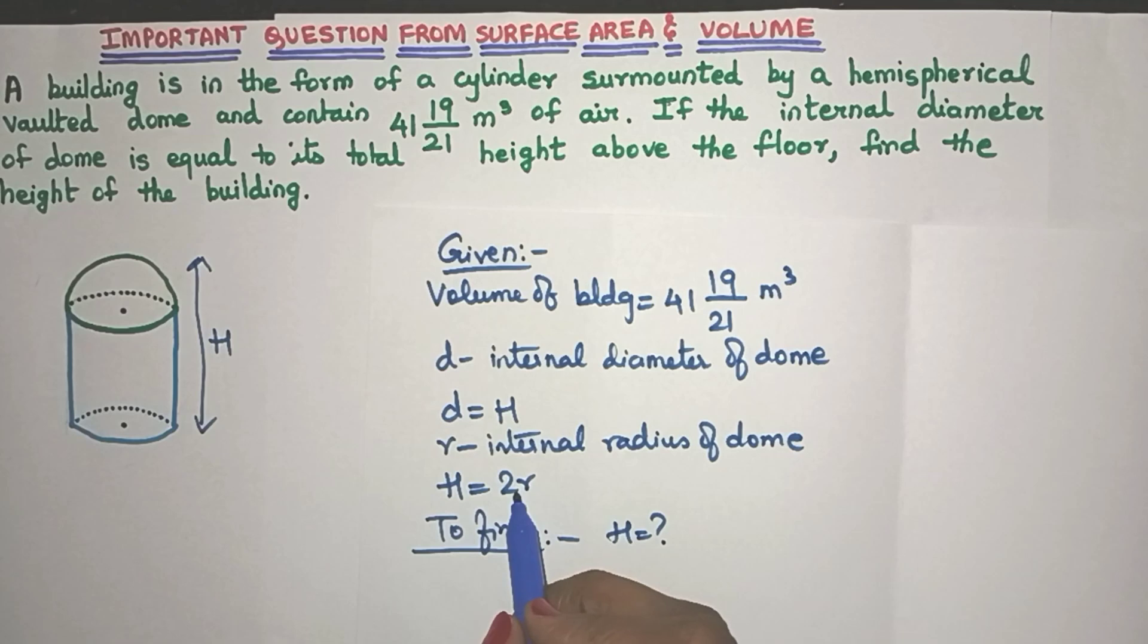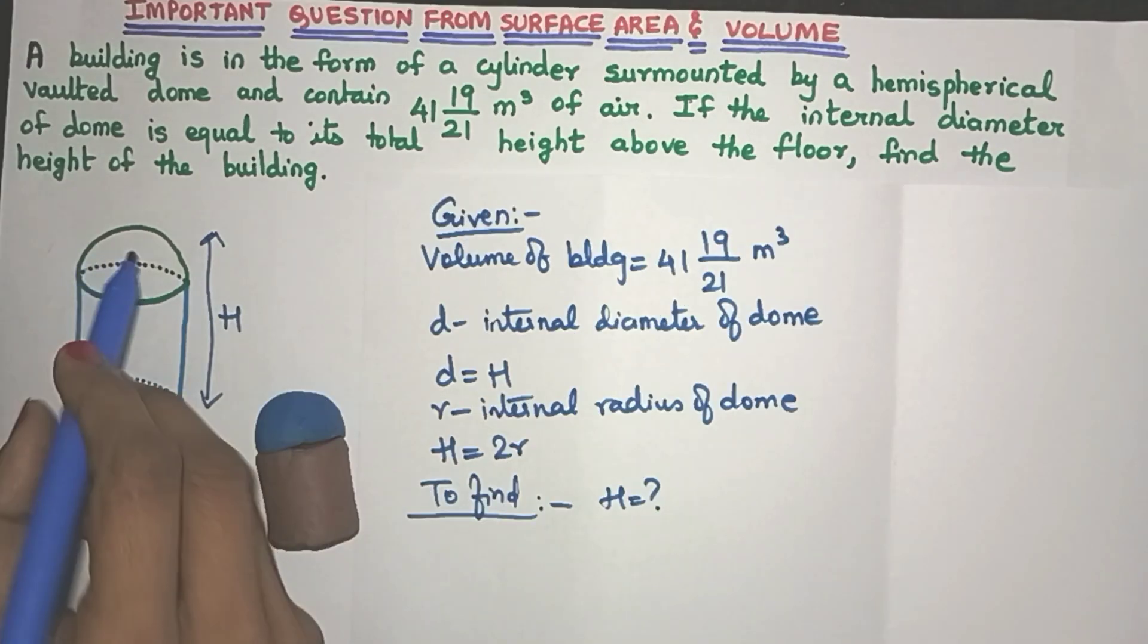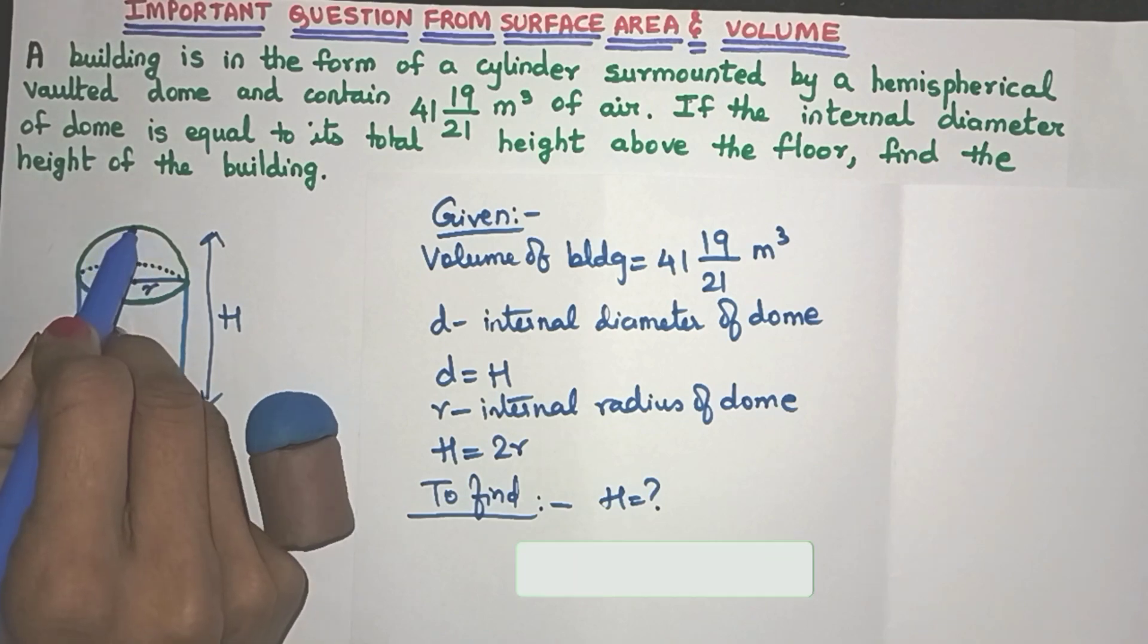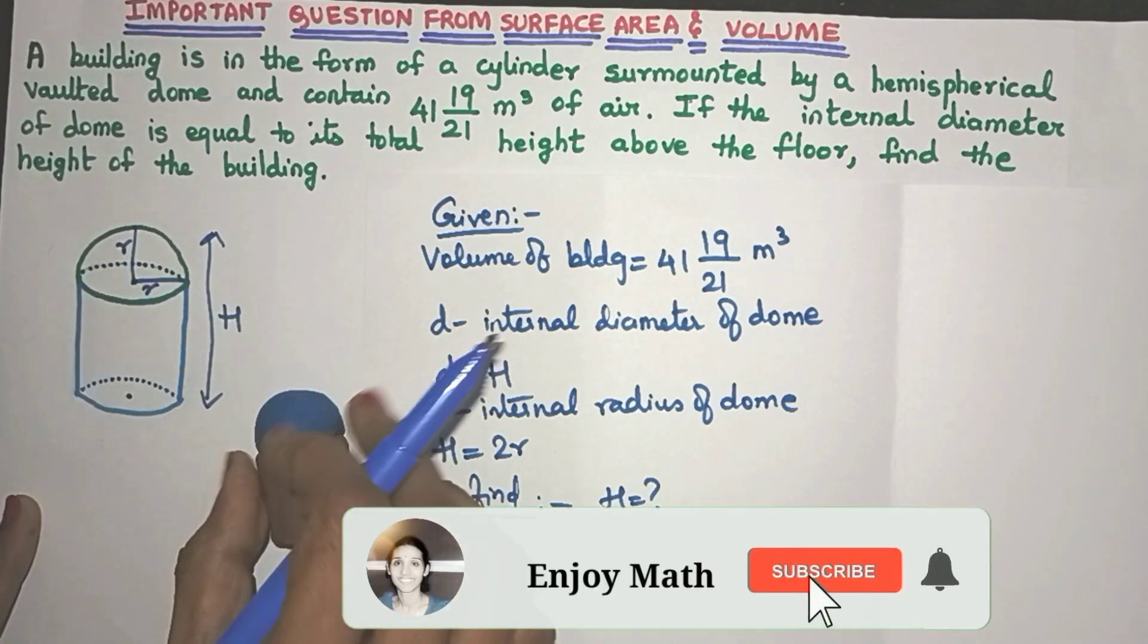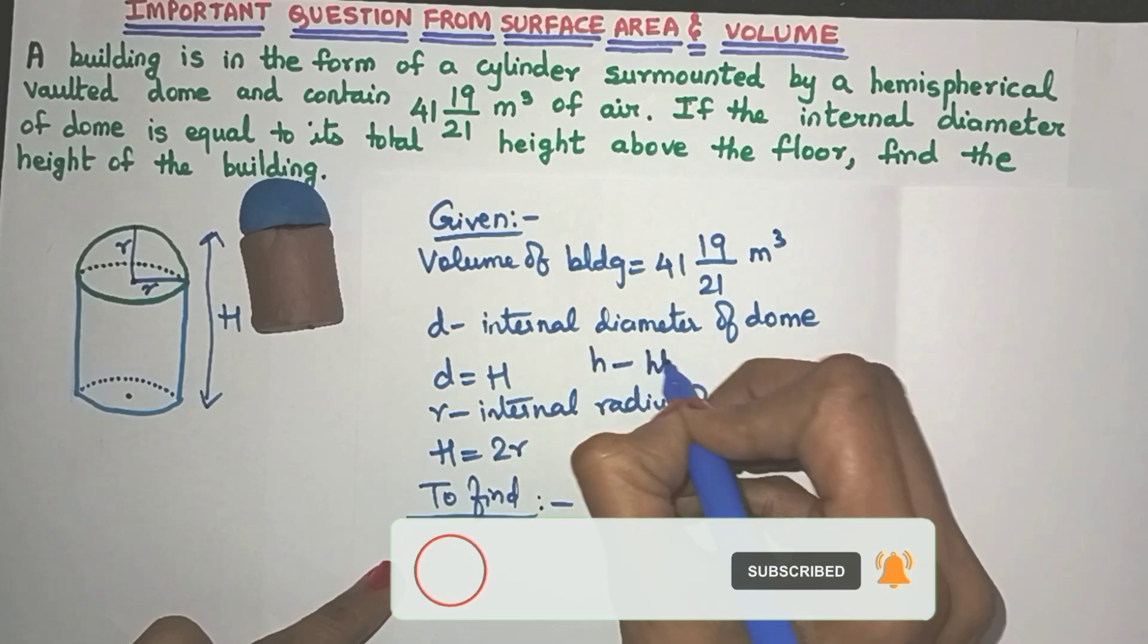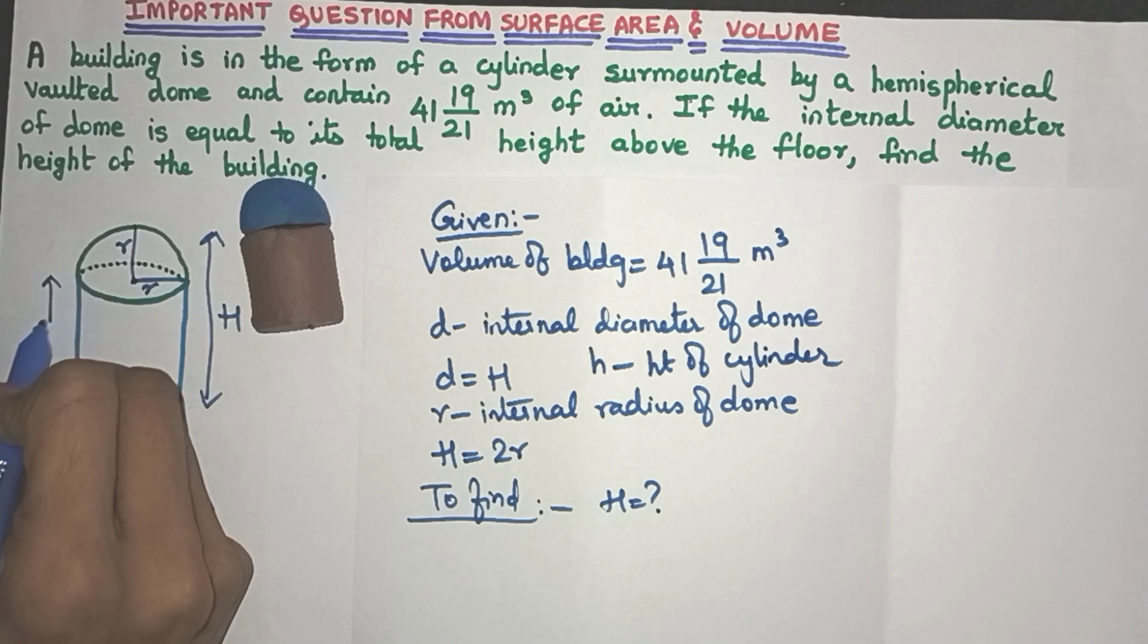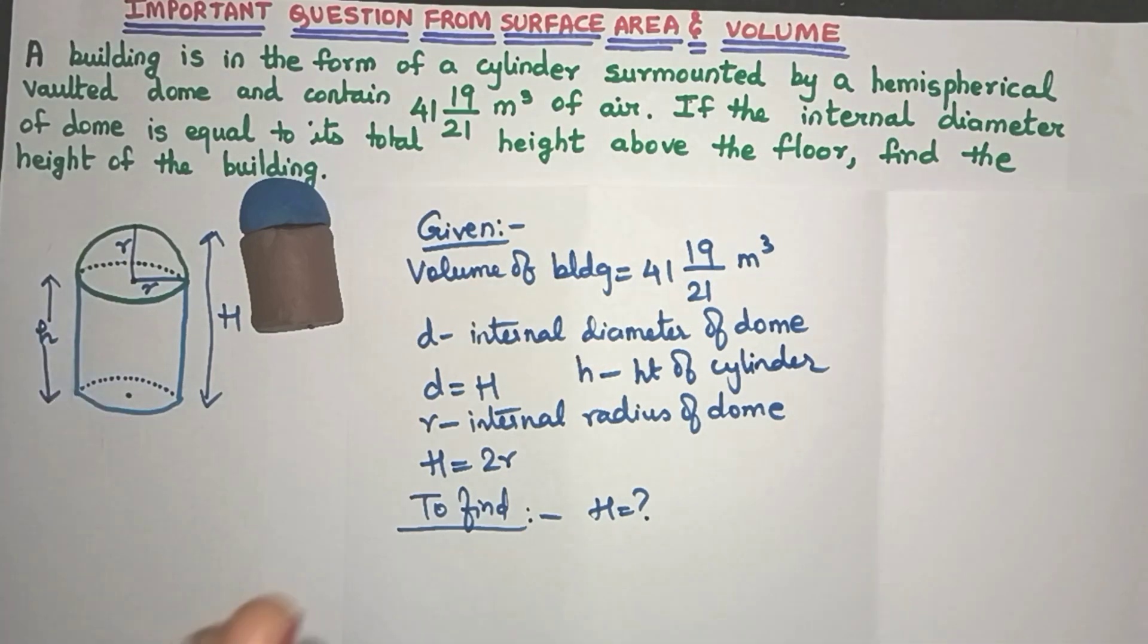So if somehow we find out what is R, we can easily find out capital H. So let's just label this. I can call it as R. Now this is also R here. Now cylinder also needs height. So let's write H as the height of the cylinder. So where shall I mark the height? Yes, this will be my H.